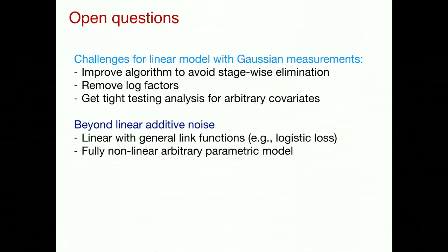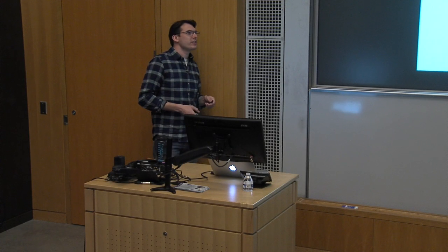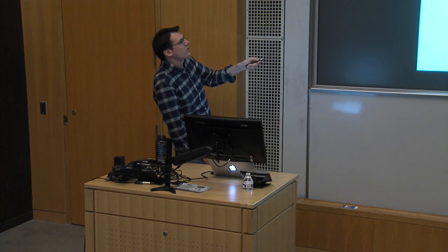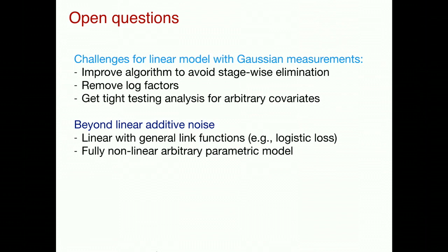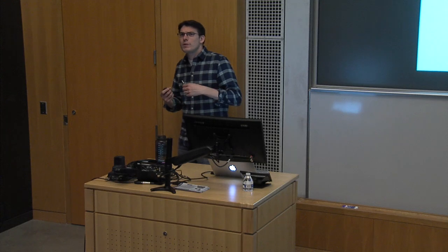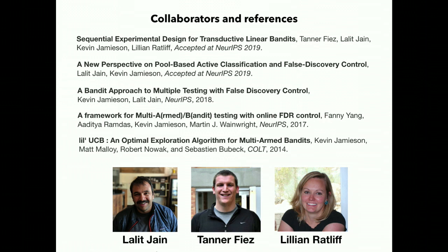There's a lot more to do: we need to generalize to more general covariate settings, and today I talked about the simplest possible setting — a linear model with mean-zero Gaussian noise. Even with that, there are still open questions. We'd like to get to more interesting function classes: general link functions, logistic models, or fully nonlinear parametric models like neural networks. But to take the next measurement to minimize uncertainty, you must quantify uncertainty, which requires theoretical insights. I think the results coming out for deep learning are exciting, but we still have a long way to go. Thank you — I'd like to thank my collaborators Lalit Jain, Tanner Feis, and Lillian Ratliff.